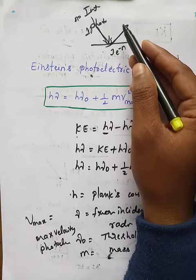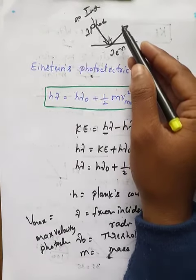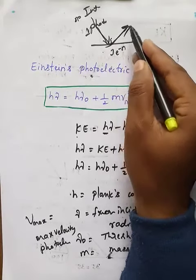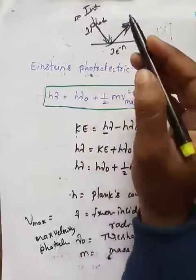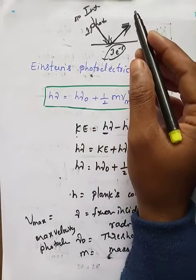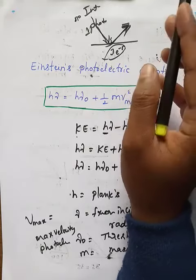As intensity increases, more electrons are emitted per second. Flow of electrons is current, so the current also increases.